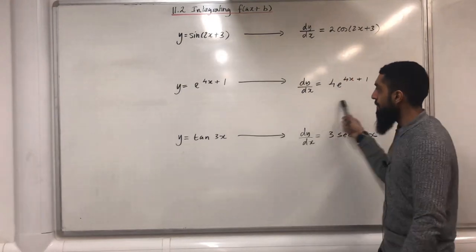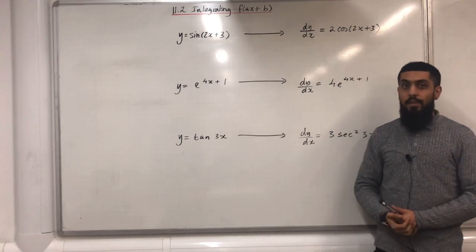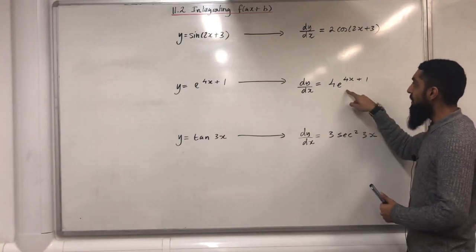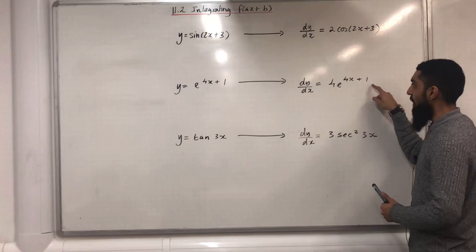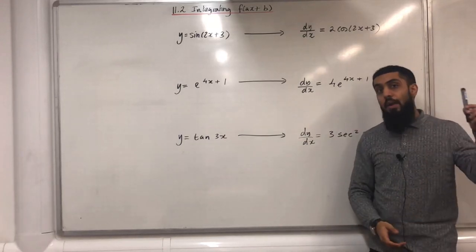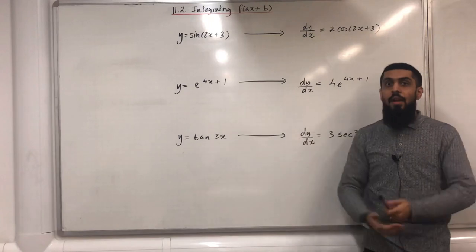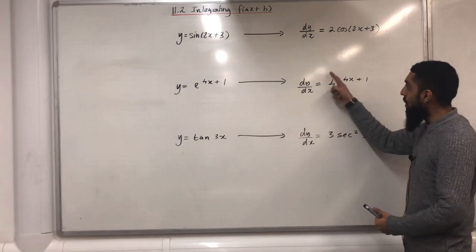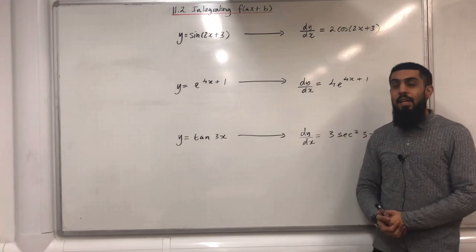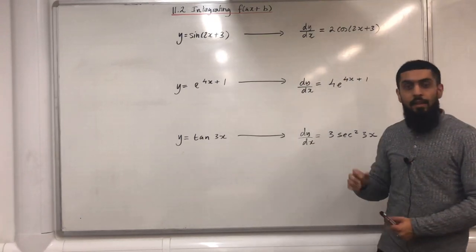Next line. When y is equal to e to the power of (4x + 1), dy/dx is equal to 4e to the power of (4x + 1). Going from dy/dx back to y is called integration. Therefore I can conclude that the integral of 4e to the power of (4x + 1) will just be e to the power of (4x + 1) + c.